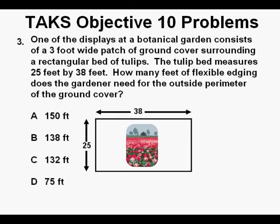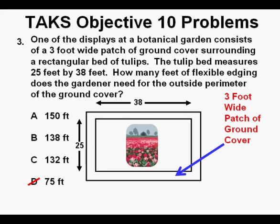The tulip bed measures 25 by 38 feet. I recommend at this point taking a quick look at the answers. I hope it's obvious that 75 feet is definitely too short, so we can immediately improve our chances by eliminating answer D. For these problems involving geometry, drawing a picture will almost always help us to eliminate at least one answer, improving our odds of getting the correct answer.